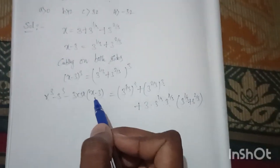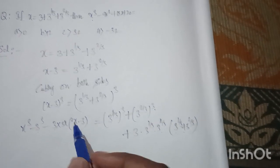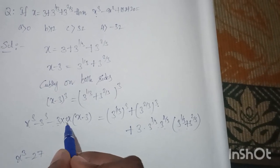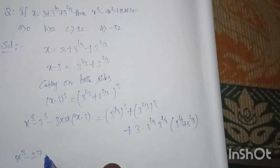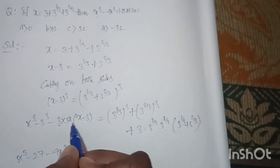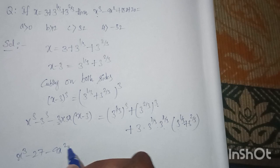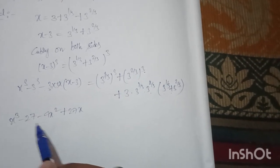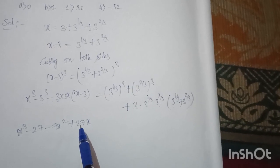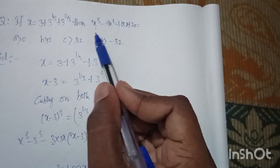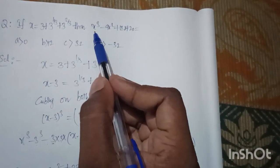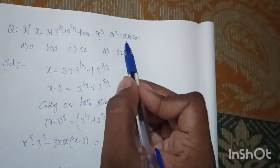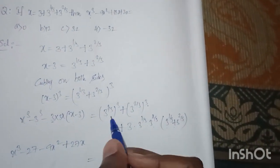Expanding the LHS: x³ - 27 - 9x² + 27x. Now compare this with the required expression x³ - 9x² + 18x + 20. We already have the x³ term and the -9x² term here, and we need 18x + 20. Let's see if we can get those from the RHS terms.